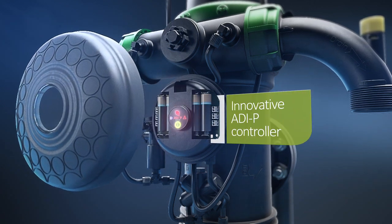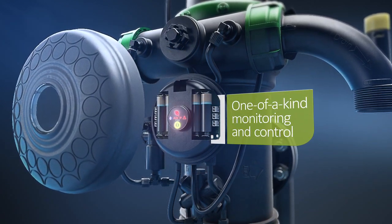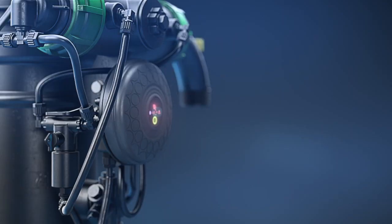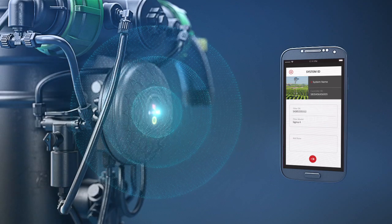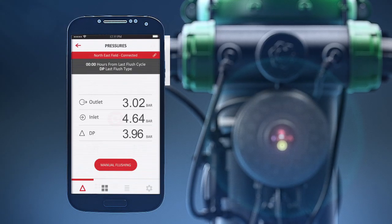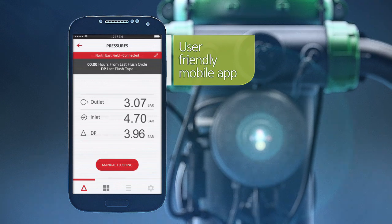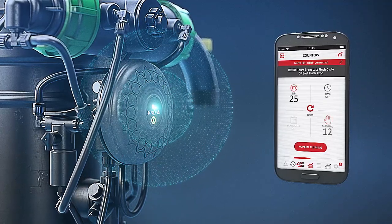The Mini Sigma offers the innovative ADP controller for one-of-a-kind monitoring and control functionality. Developed by AMIAD specifically for its filters, the ADP interacts with AMIAD's advanced user-friendly mobile app to provide maximum filtration performance data.